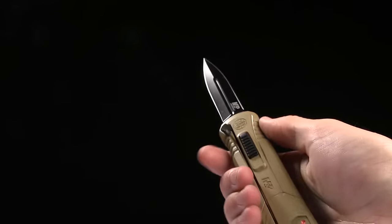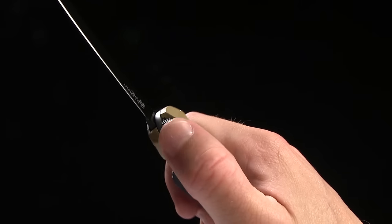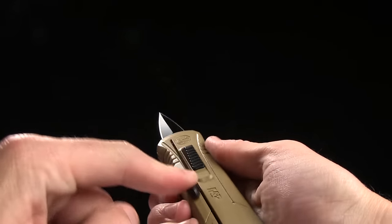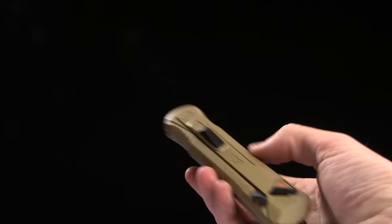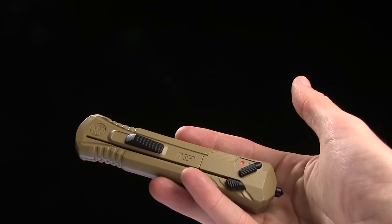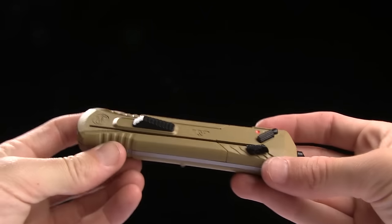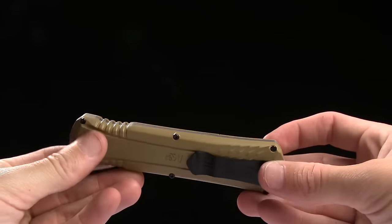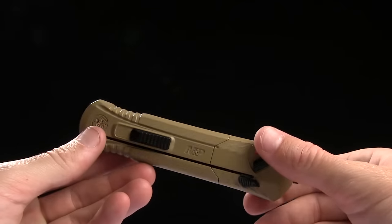And you've got a disengagement method right there. You slide that and then you retract the blade just like that. Overall handle length is 5.375 inches and it is tan aluminum on this model. We have a gray as well.